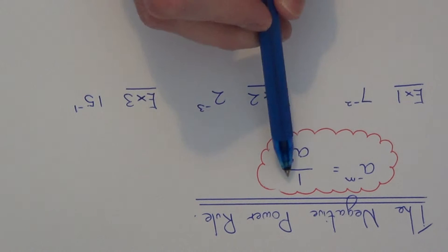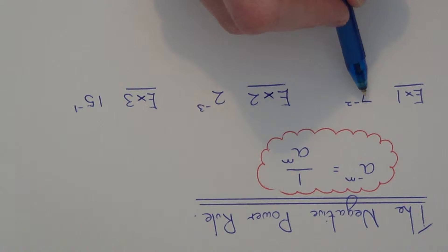So let's use this rule on these three examples. Example one, we've got to work out 7 to the power minus 2.